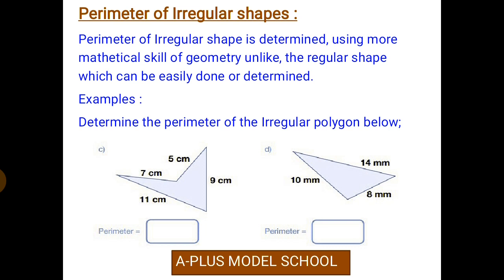On our next slide, we have the perimeter of irregular shapes. Now we want to look into irregular shapes and how to get their perimeters. Perimeter of irregular shapes is determined using more mathematical skill of geometry unlike the regular shapes, which can be easily done or determined.